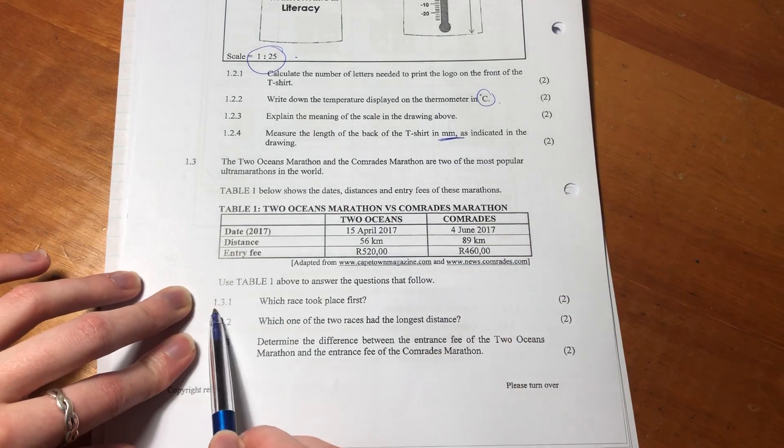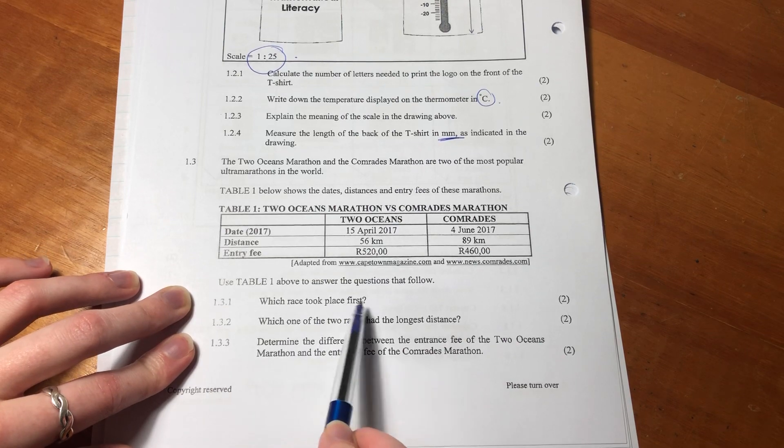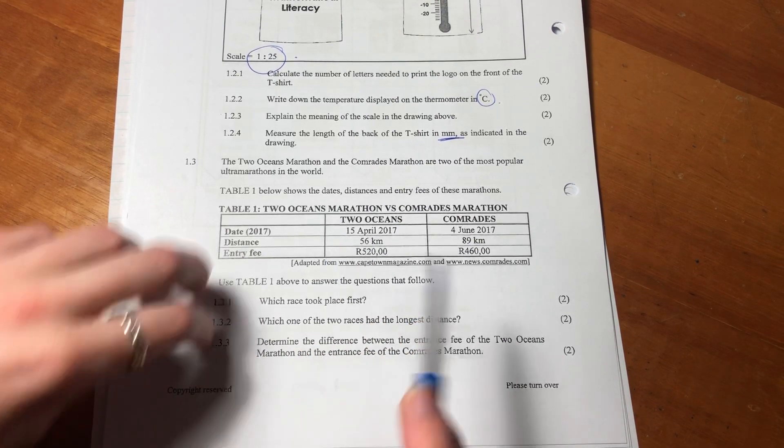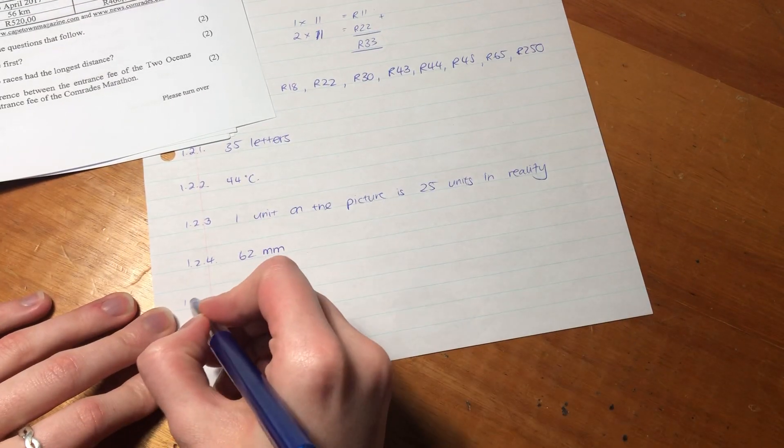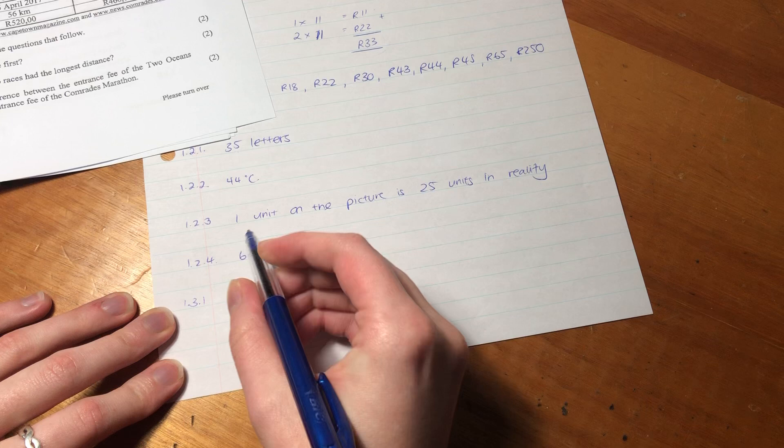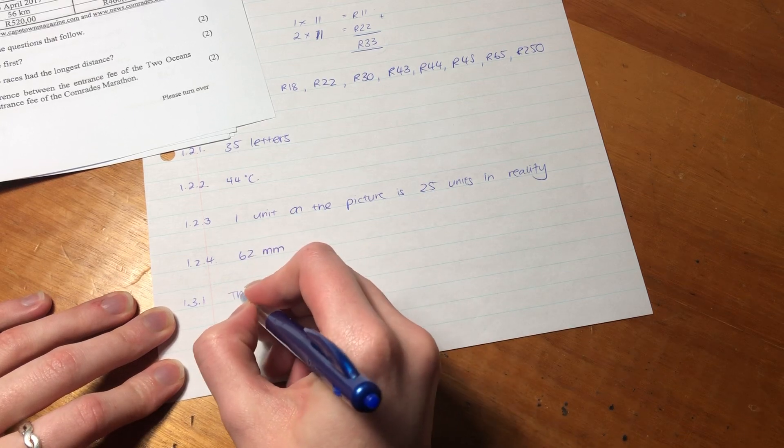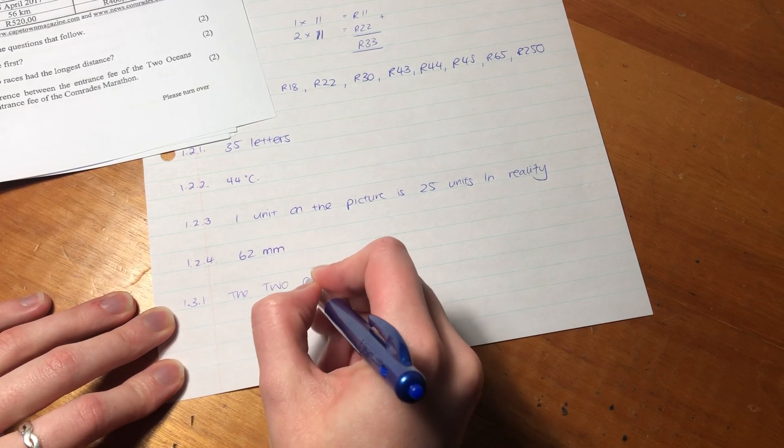Okay, 1.3.1, which race took place first? April is before June, so it is the two oceans. The two oceans.